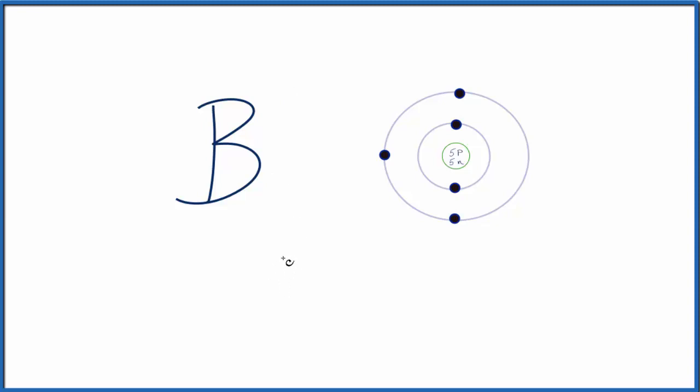So for just boron in that outer shell, the highest energy level, we have one, two, three valence electrons. So we could write those three valence electrons in the highest energy level just like this, one, two, three. And that would be the Lewis structure for boron.